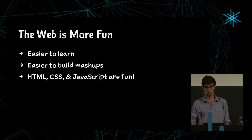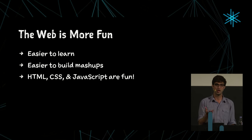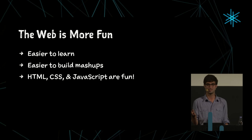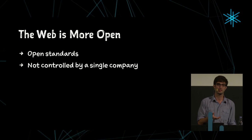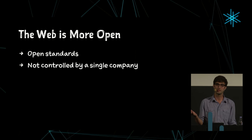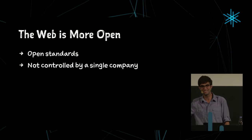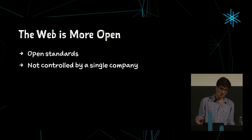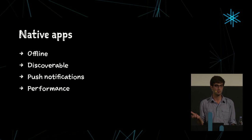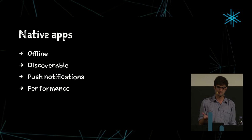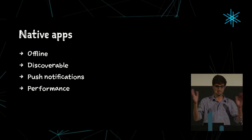The web is more fun and easier to learn. A lot of us learned to code just by viewing source, which is a really nice feature. It's easier to build mashups and HTML, CSS, and JavaScript are really fun. It's also more open — you have open standards, a standards process where you can share your opinion, and the standards aren't controlled by a single company. Native apps, meanwhile, have tended to work better offline, are more discoverable, offer push notifications, and have had better performance.